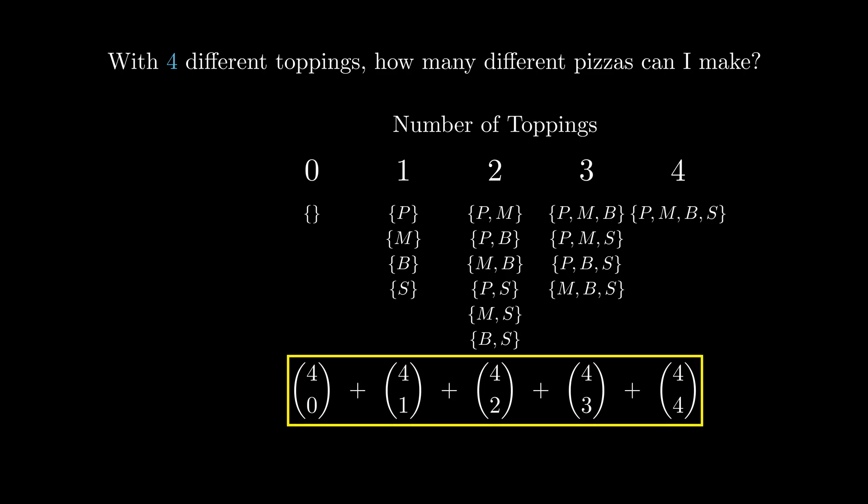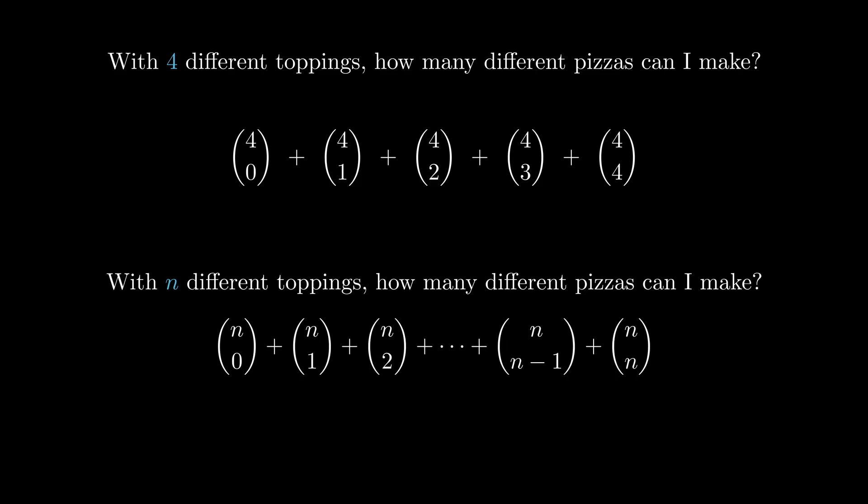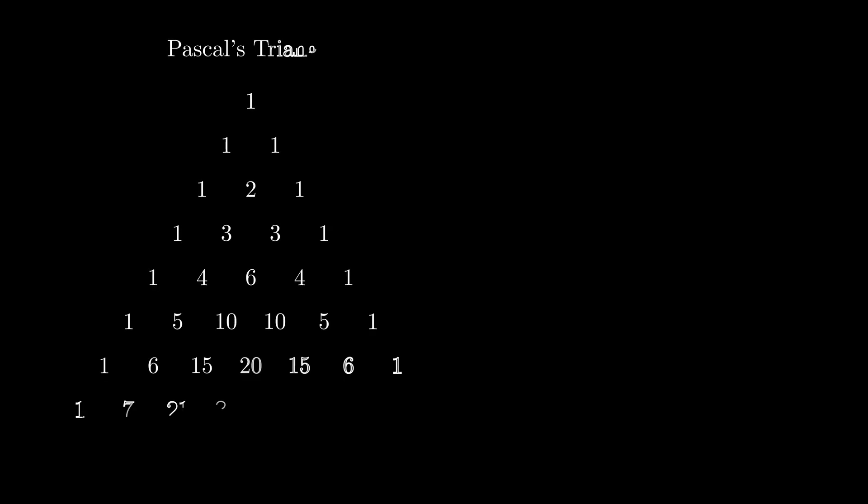It should also be easy to see that this solution is generalizable to an arbitrary n toppings. If we have n toppings, then this expression gives us the total number of possible pizzas. Now let's take a look at where each of these combinations are located on Pascal's triangle. Four choose zero is here, four choose one is here, and so on.